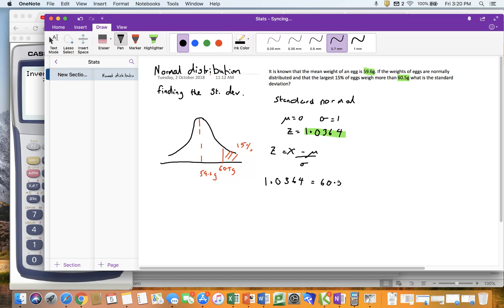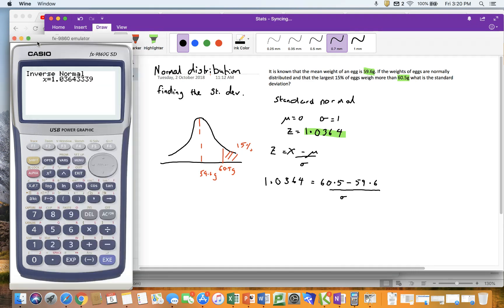So I've now got an equation that looks like 1.0364 equals 60.5 minus 59.6 divided by the standard deviation I don't know. And again, I could rearrange that, that's a really easy rearrangement. I multiply both sides by sigma, I divide both sides by 1.0364 and that's going to give me my answer.